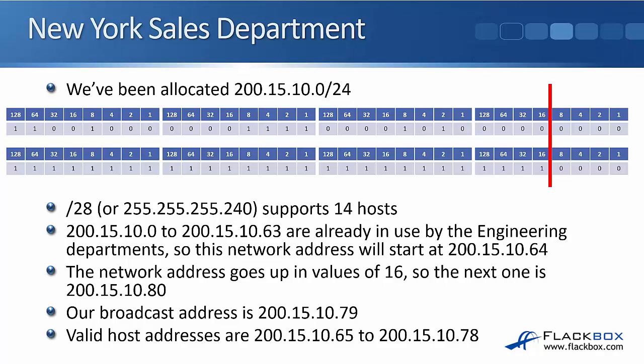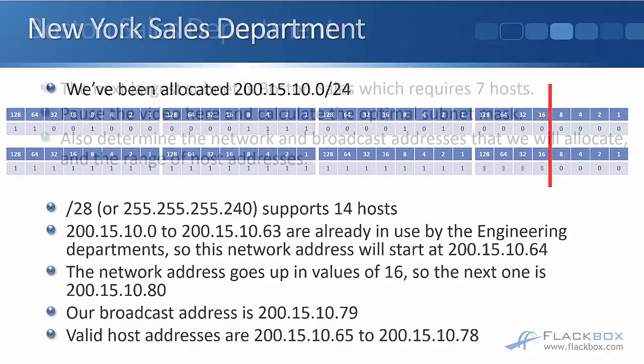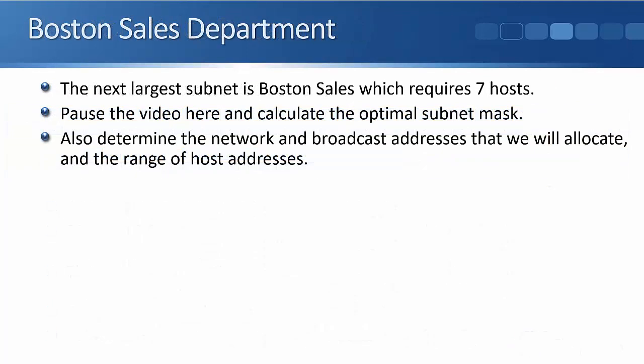If we look at the line, we can see it's after the 16, so 64 plus 16 is .80, take one away. Our broadcast address is going to be 200.15.10.79, and the available host addresses are 200.15.10.65 to 200.15.10.78 — the addresses between the network address and the broadcast address. Okay, that's our first three departments done.